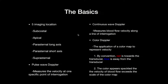Starting with transthoracic echo, there are five imaging locations, but you're not limited to these — you can be creative. Pulse wave Doppler measures velocity at a specific point of interrogation. Continuous wave Doppler sums up blood flow velocity along the line of interrogation. By convention in color Doppler, red is toward the probe and blue is away from the transducer. If the color appears speckled or aliased, the blood flow velocity exceeds the scale of the color map.